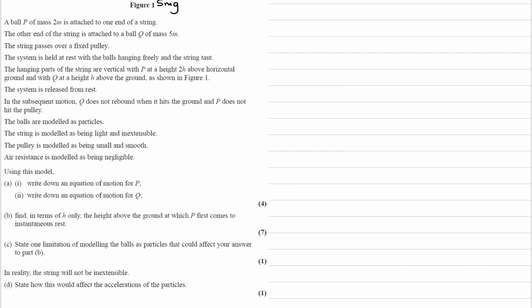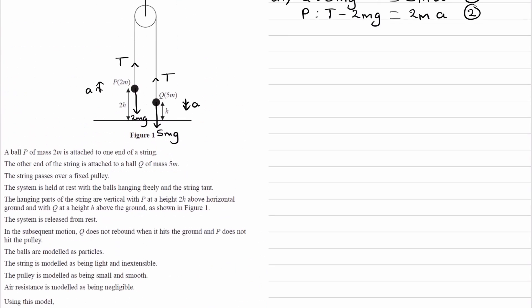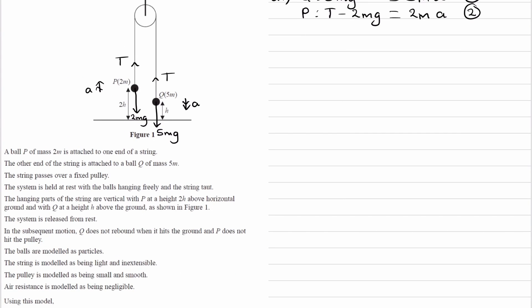So for part B, it says, find in terms of H, the height above the ground at which P first comes to instantaneous rest. Let's break this up into different stages. So stage 1 is when Q travels a distance of H down towards the ground and then hits it, and then in that time, P will travel upwards a distance of H as well. So that's our first stage.